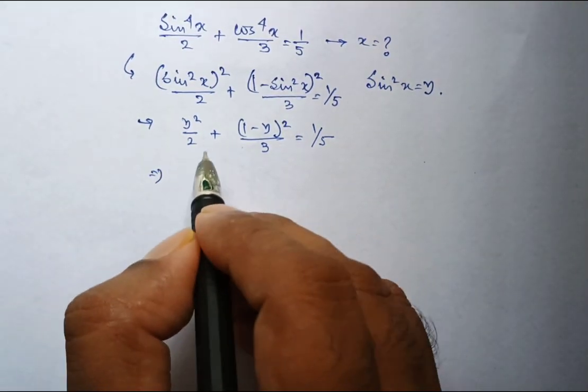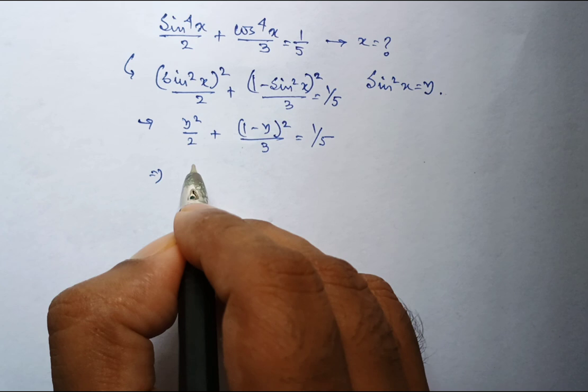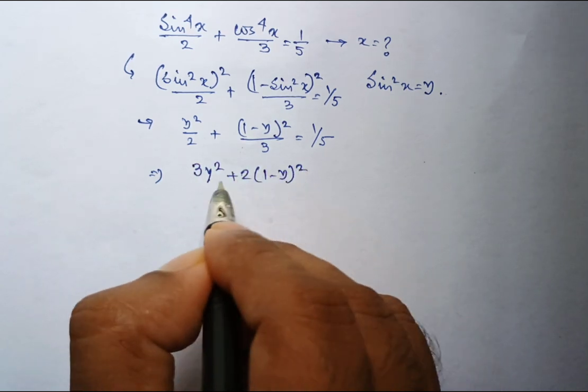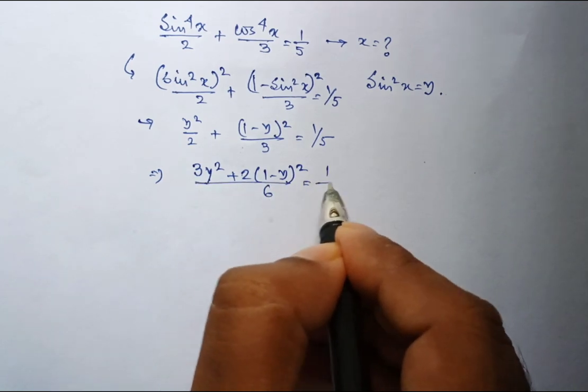So that means if we just cross multiply for fractions, it is 3y square plus 2 into 1 minus y whole square divided by 6 equal to 1 by 5.